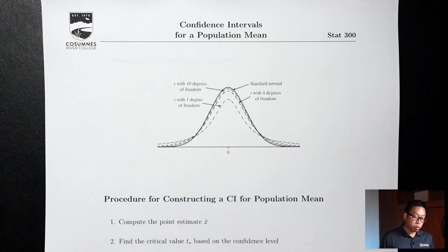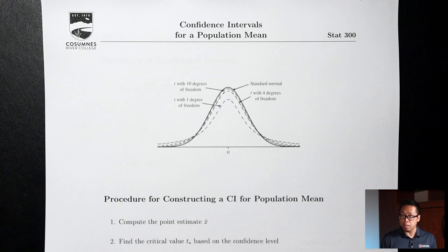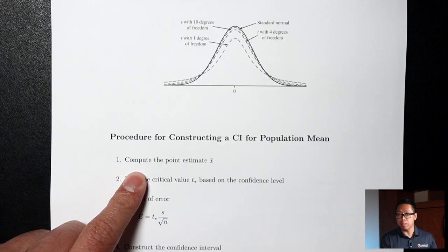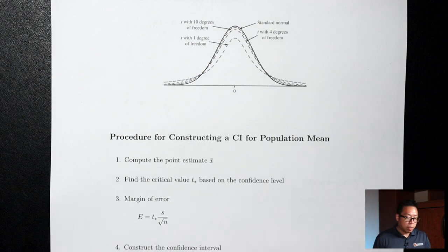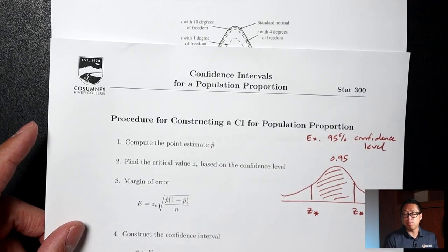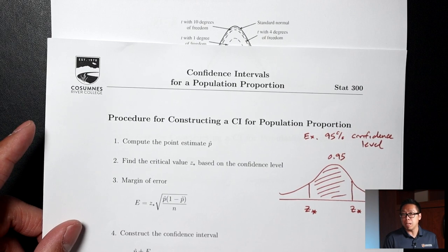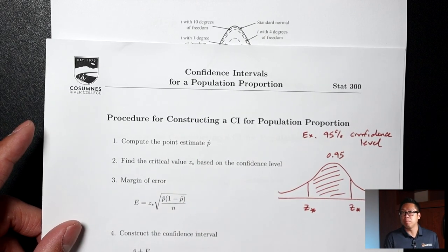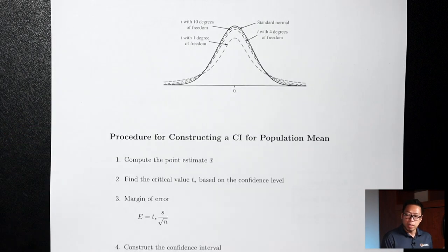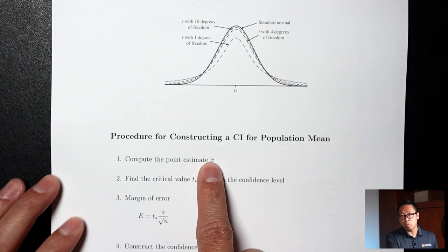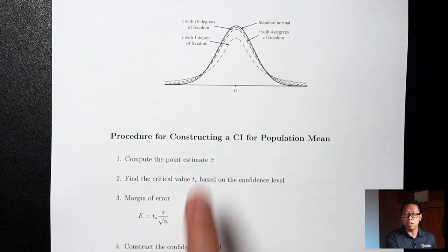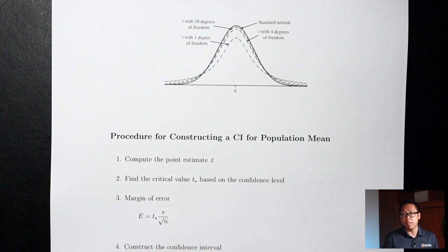The procedure for constructing a confidence interval for a mean is similar to the four-step process used to find a confidence interval for a proportion. Step one: compute the point estimate. In the last lecture, our point estimate was called p-hat, which stood for the proportion from a sample. Now, if you're looking for a confidence interval for a mean, instead of p-hat, we'll be finding x-bar — the symbol for the mean from the sample.